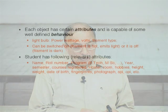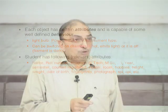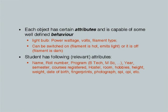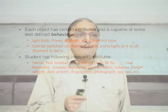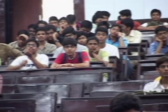Consider something well known to us — a student is an animate object. A student could be considered to have the following relevant attributes: name, roll number, the program the student is studying (B.Tech, M.Sc, M.Tech, PhD), the current year and semester of study, courses registered, hostel and room number, hobbies, height, weight, date of birth, fingerprint, photograph, SPI, CPI, and more. There could be a hundred attributes one could easily write.